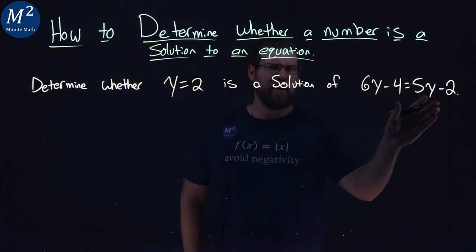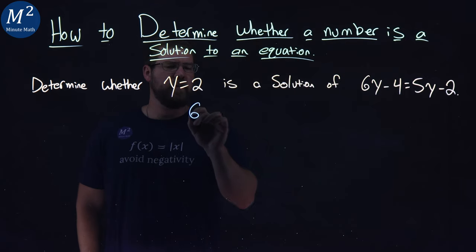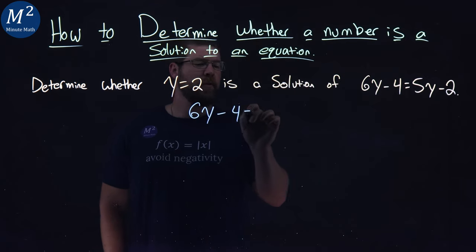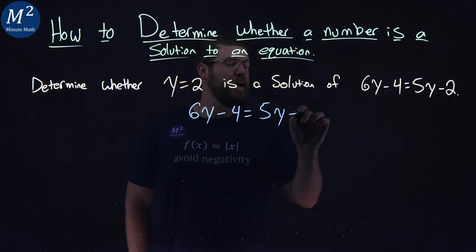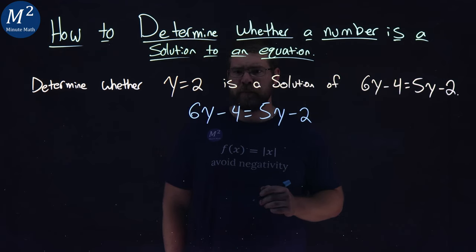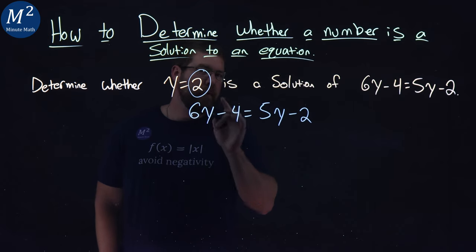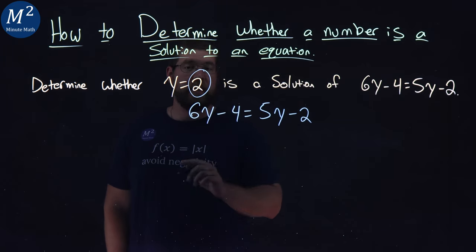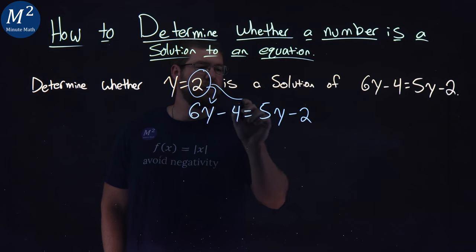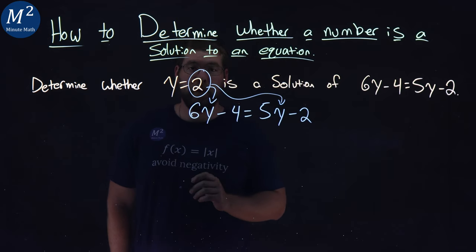Our first step is, I'm going to write that equation again, 6y minus 4 equals 5y minus 2. Then what we're going to do is take this y equals 2, and I'm going to substitute it in for every single y that I see. I have one here and one there.